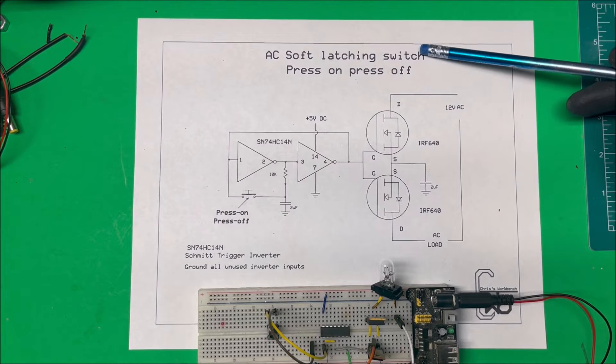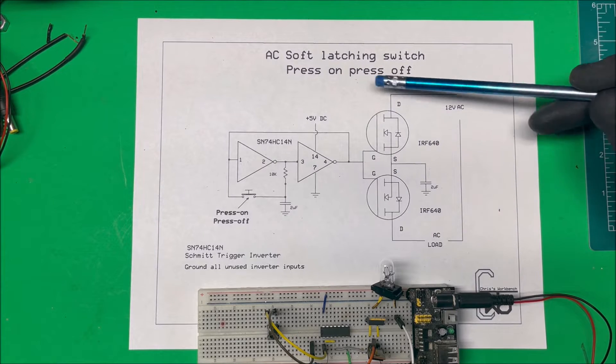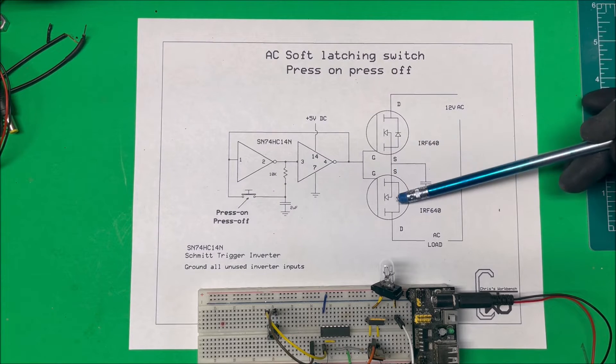Let's take a look at an AC soft latching switch. I want to control an AC load and I want to do it with one button: press on and press off. And I'm going to use MOSFETs to switch the AC load.